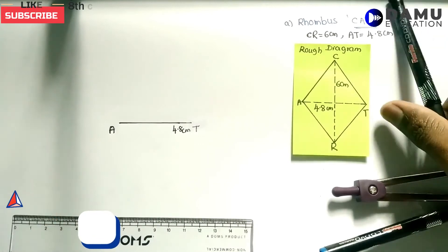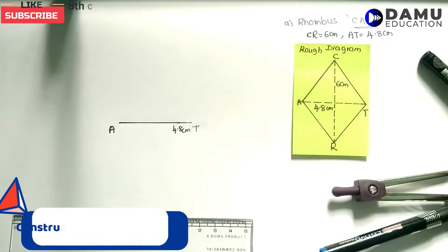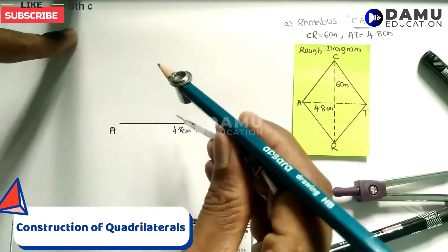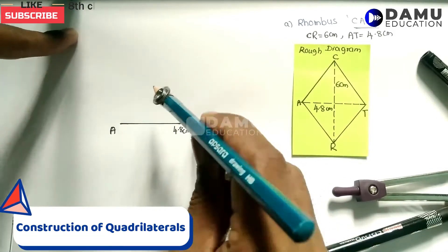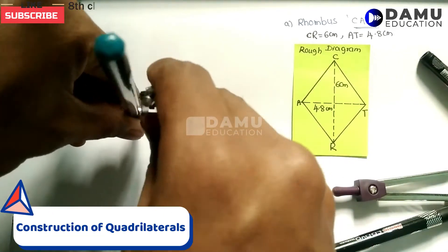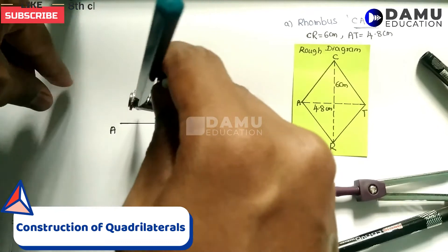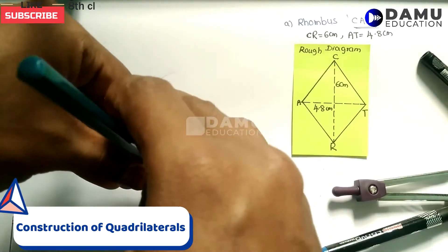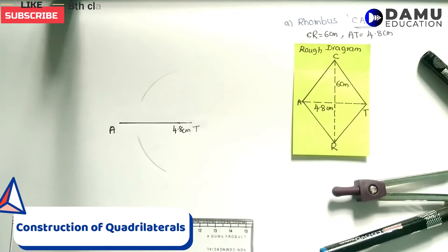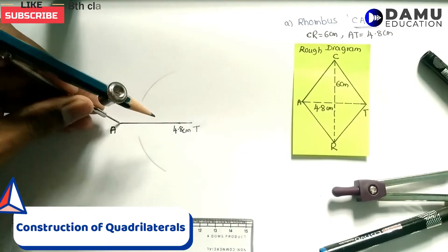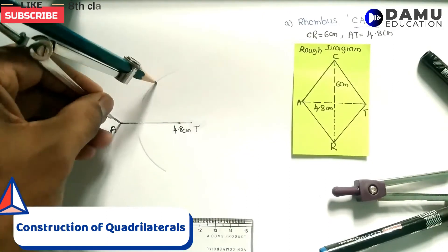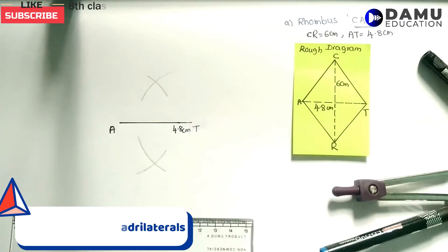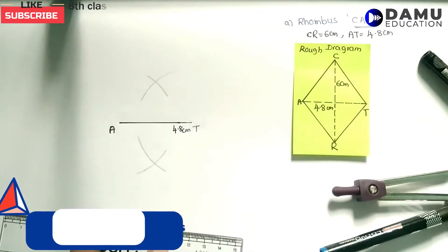For this diagonal we need to construct a perpendicular bisector to bisect it equally on both sides. The perpendicular bisector is the midpoint of this line. We draw arcs from both sides — from A and from T.